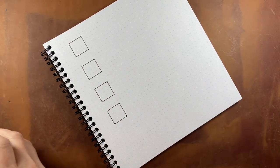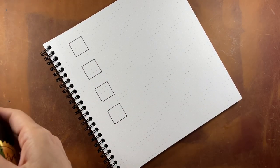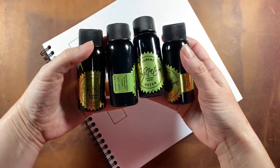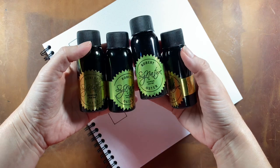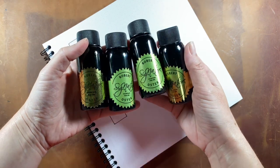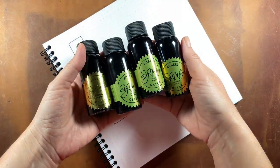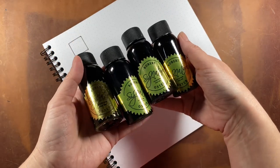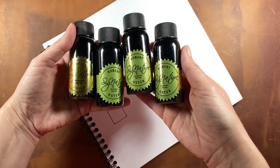Hey guys, welcome back to Paper Made Me Do It. In this video, we are going to be sampling four new inks that I recently purchased. They are all from the same line from a brand that I've been wanting to try for some time, and that is the Robert Oster line.